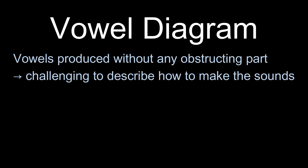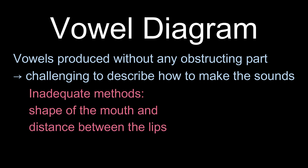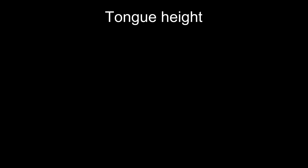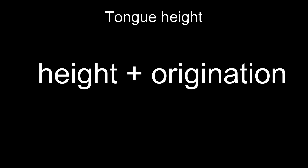Since vowel sounds are produced without any obstructing part in the mouth, it can be hard to describe how to pronounce vowel sounds. Some methods suggested are the shape of the mouth and the distance between the lips. These methods are limited, however, since they do not explain what is really going on inside of the mouth. To describe the production of vowel sounds systematically, linguists employ two measures: the height of the tongue and the originating location of the sound in the mouth.